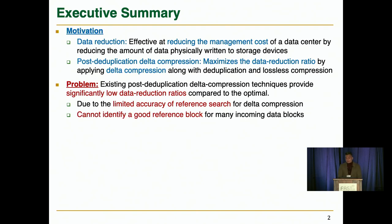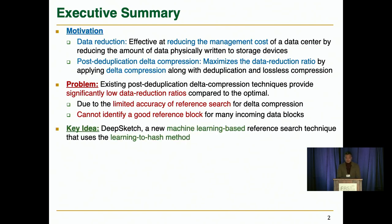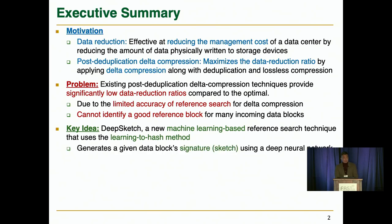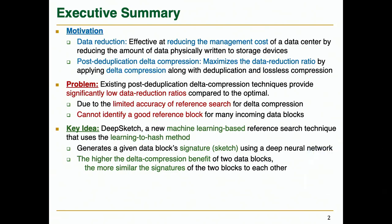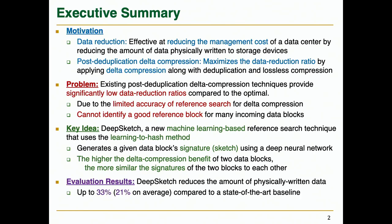In short, the existing techniques often fail to identify any reference block for many incoming blocks that can actually benefit from data compression. To address this, we propose DeepSketch, the first machine learning-based reference search technique to generate a given data block signature called the sketch, such that the higher the delta compression benefit over two data blocks, the more similar the two blocks' sketch values. Our evaluation shows that DeepSketch significantly reduces the amount of written data compared to the state-of-the-art baseline.